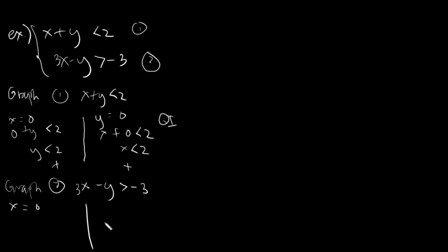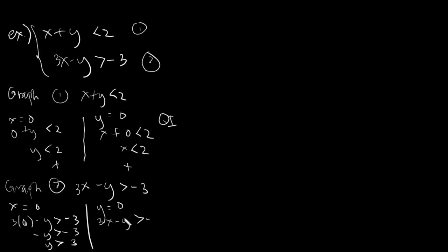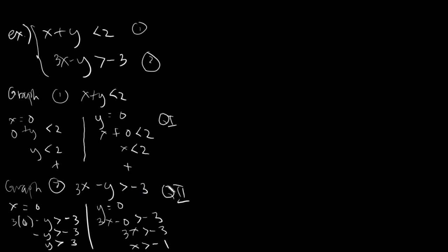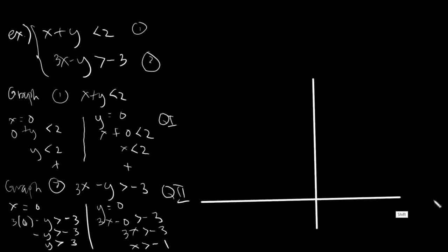We assume x is 0 and y is also 0. With x as 0: 3 times 0 minus y is greater than negative 3, giving us negative y is greater than negative 3, so y is greater than positive 3. Then with y as 0: 3x minus 0 is greater than negative 3, so x is greater than negative 1. So we have a negative x and positive y — this is on quadrant two. Knowing that our graph will lie on quadrants one and two, our Cartesian plane will be mostly on the first and second quadrant.